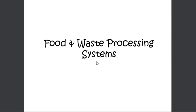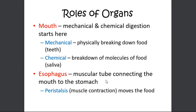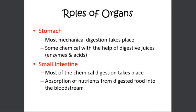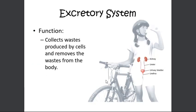Moving to the food and waste processing system. The digestive system functions to break down food. Its parts include the mouth, esophagus, stomach, gallbladder, pancreas, small intestine, large intestine, rectum, and anus. The mouth performs mechanical and chemical digestion; the stomach produces enzymes and acids. Most chemical digestion takes place in the small intestine. Water is absorbed into the bloodstream in the large intestine, and waste material is compressed into solid form and expelled through the anus.